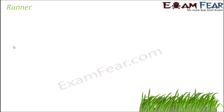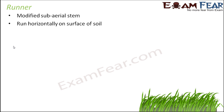We will start our discussion with runner. They have got very unique names — runner. What do we mean by runner? Somebody who runs, right? So here also we will see that these stems actually keep running along the ground. They are a modified sub-aerial stem. They run horizontally on the surface of soil. Since they move horizontally in this fashion, that is why they are known as runners.